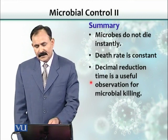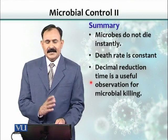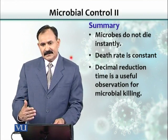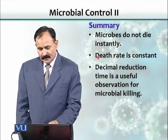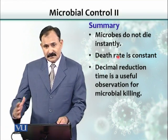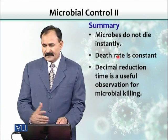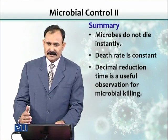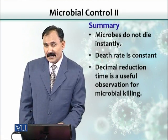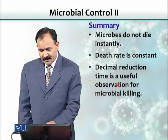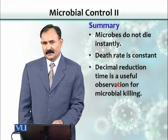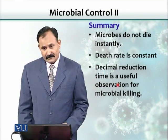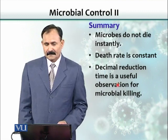In summary, at any concentration of chemical or any intensity of heat, organisms do not die instantly — they start dying with a decimal reduction, but the death rate is constant. If you keep all conditions the same — concentration, intensity of heat, and environment — you can predict the rate at which organisms die. Decimal reduction is the most useful value for knowing the efficacy of antimicrobials and physical methods like heat.